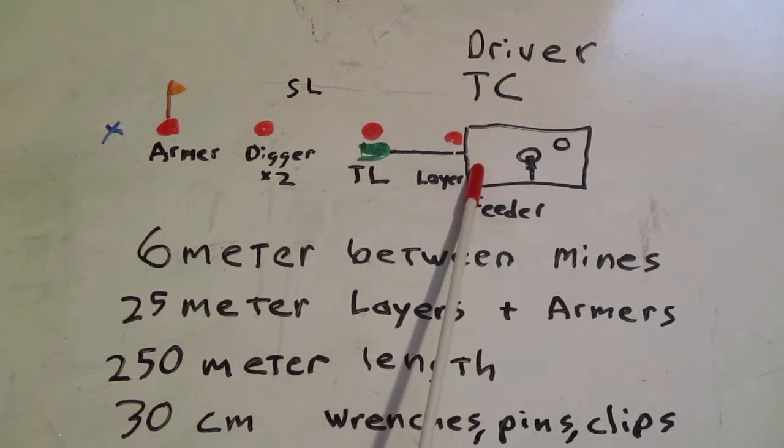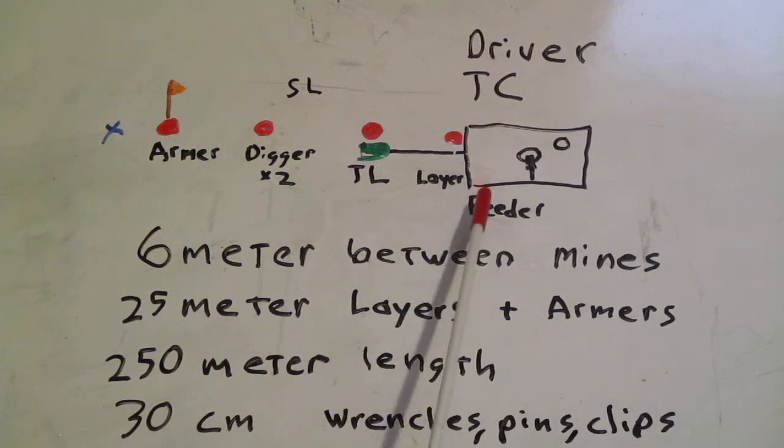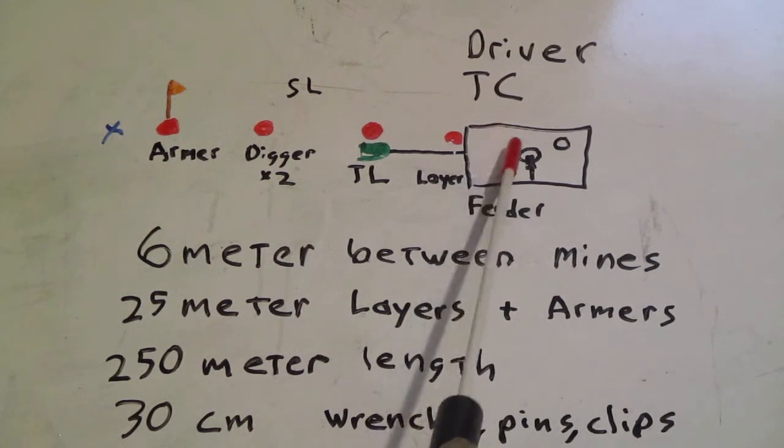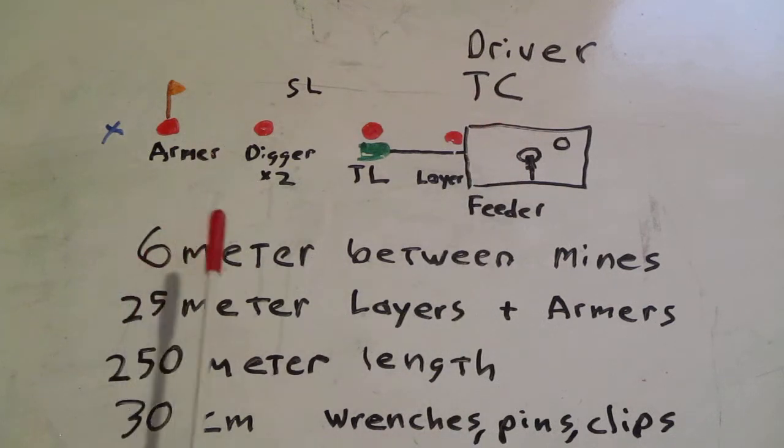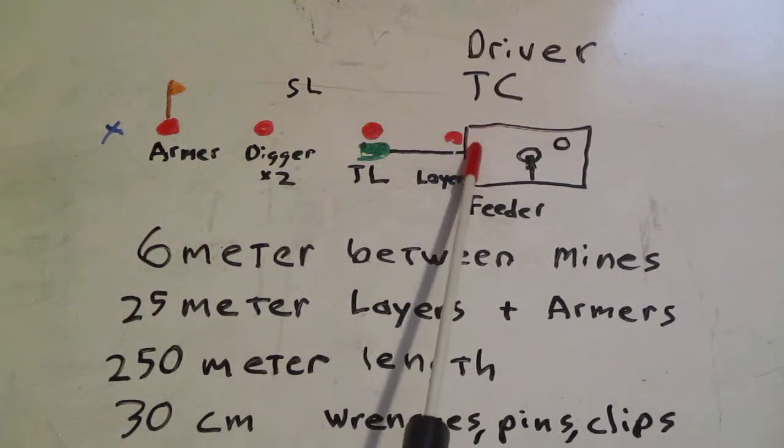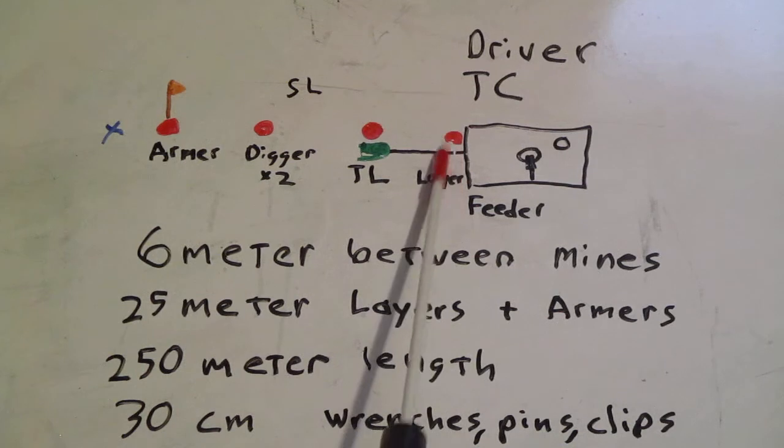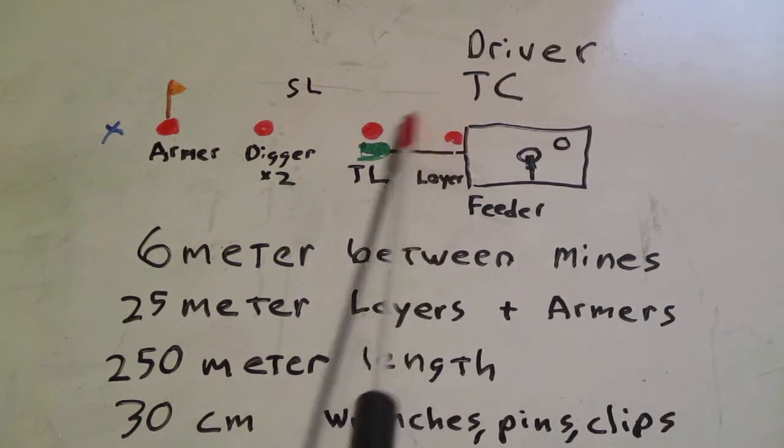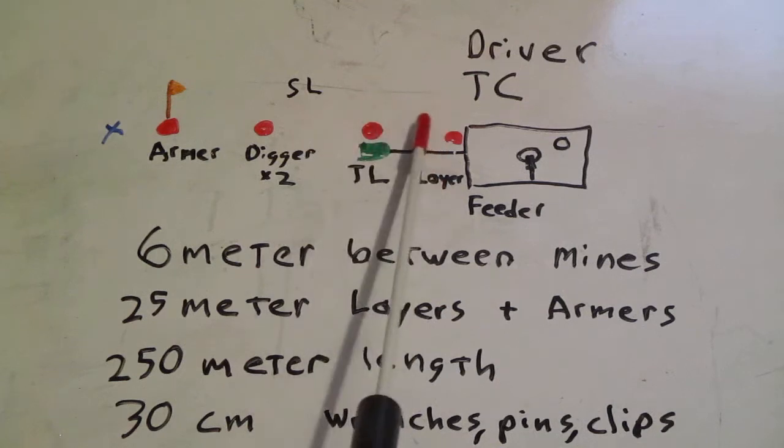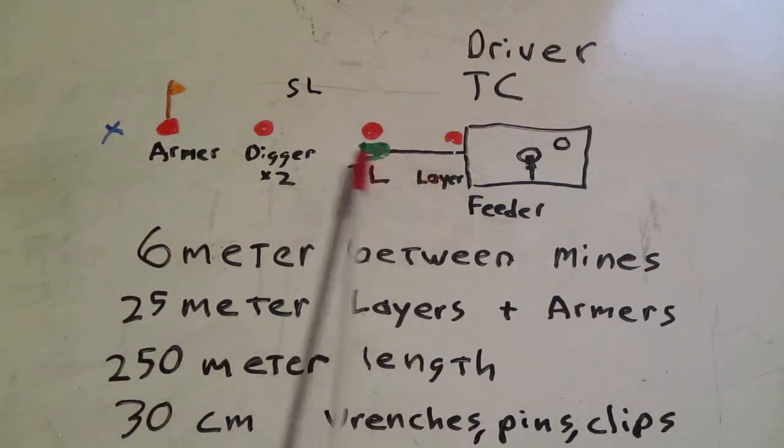You will have one person in the back of the vehicle or the back of the trailer with the mines. That is the feeder. They are in charge of the mines that are back there. Directly behind the vehicle you will have a person that is the layer. It should be on the same side as the rope, that the mines are getting laid on. I just had to write it on this side because of space.